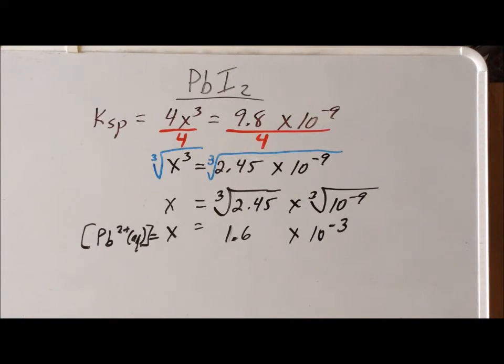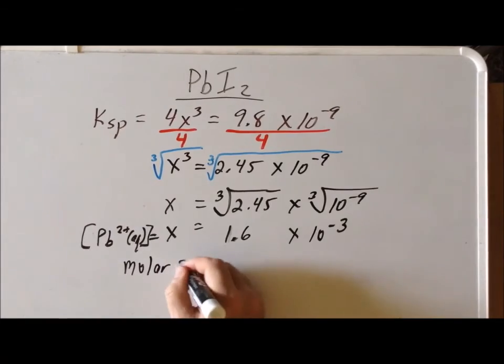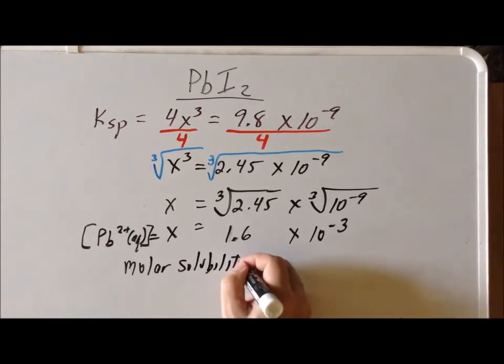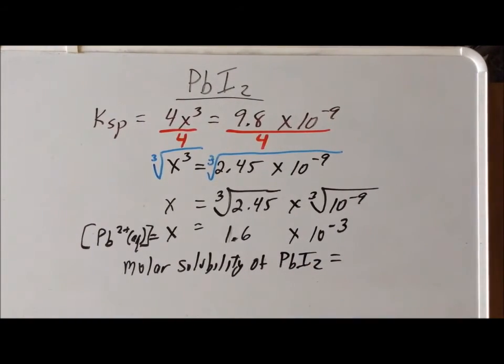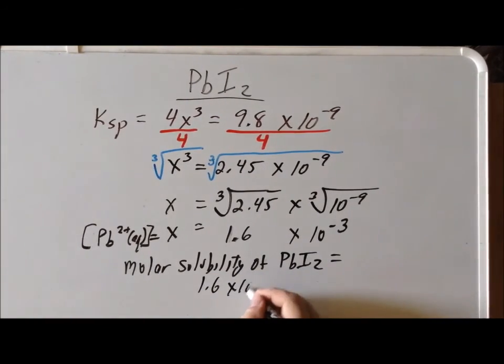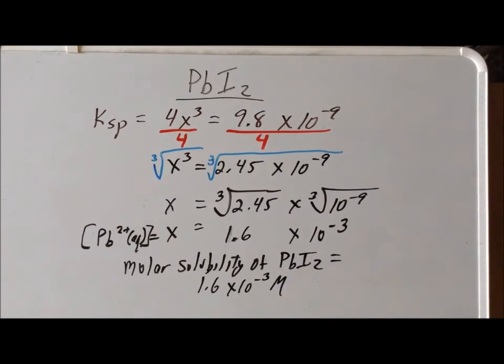So the concentration of lead 2+ ion that we see here is the same as the concentration of the dissolved solution. This tells us that the molar solubility of lead iodide, when it's as concentrated as it's going to be, is going to be 1.6 times 10 to the minus 3 molar. Another way to say the same thing is that if we make the most concentrated solution of lead iodide that we can at 25 degrees centigrade, that solution will have a concentration of 1.6 times 10 to the minus 3 molar.